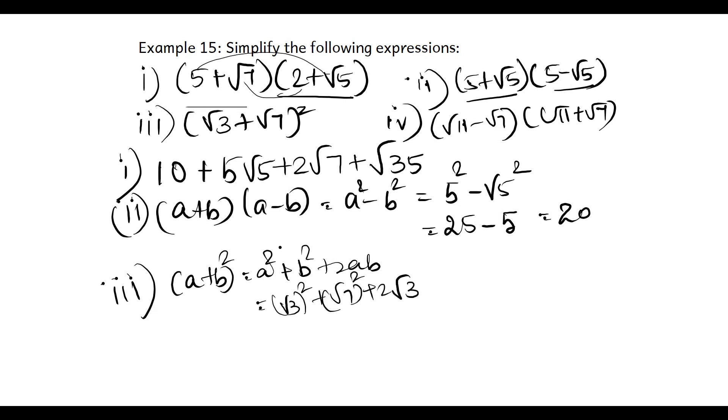Root 3 into root 3 is 3, root 7 into root 7 is 7, plus 2 into root 7 into root 3 can be written as root 21. So this is reduced to 10 plus 2 root 21. You can take 2 outside, the result is 5 plus root 21.